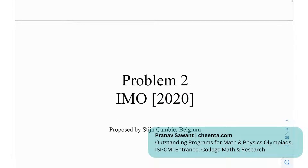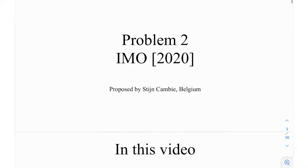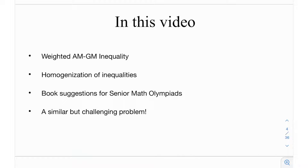This is problem number two from the IMO in 2020. Problem number two is actually not that hard — it's fairly doable and was proposed by Belgium. In this video, we're going to look at the weighted AM-GM inequality. We'll first cover what AM-GM is, then talk about weighted AM-GM. After that, we have homogenization of inequalities, which is just a standard technique.